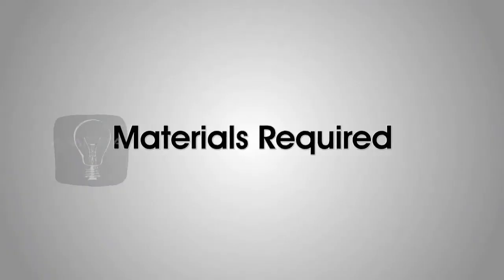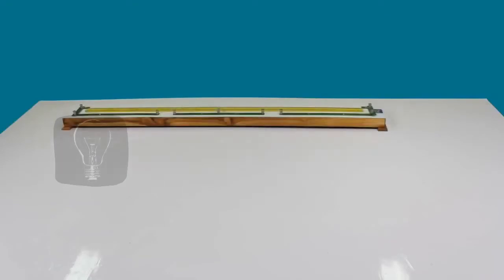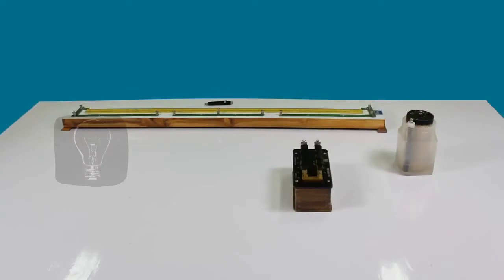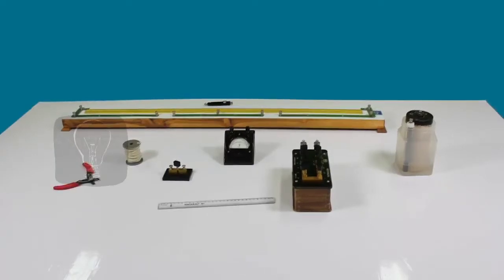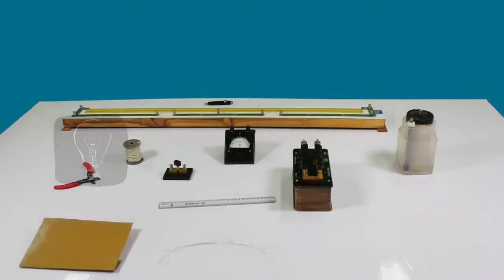Materials required: A meter bridge, jockey, Leclanche cell, resistance box, galvanometer, key, connecting wires, wire cutter, scale, resistance wire, and sandpaper.